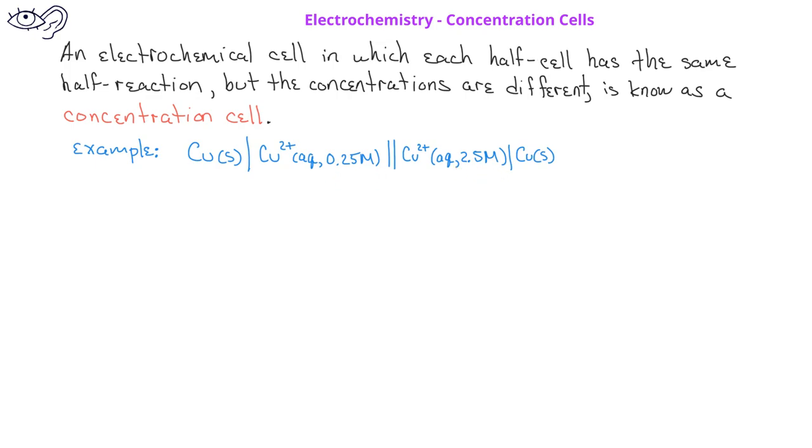Since the two half cells are identical, the standard cell potential will always be zero, since the standard reduction potentials will always be the same.